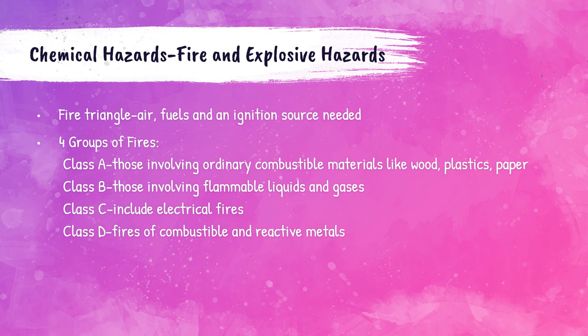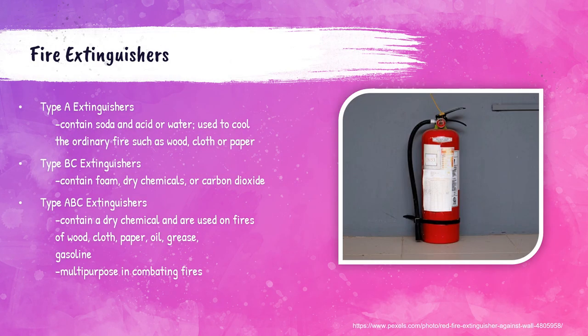Fires are also a hazard in the laboratory. There are four classes of fires: Class A fires are caused by ordinary combustible materials such as wood or paper; Class B fires are caused by a vapor-air mixture over flammable solvents such as gasoline or grease; Class C fires occur in or around electrical equipment; and Class D fires involve combustible metals such as magnesium or lithium. Type A extinguishers contain water or soda acid and are used to cool Class A fires. Type BC extinguishers contain carbon dioxide, foam, or dry chemicals. Type ABC extinguishers consist of a dry chemical and serve as a multi-purpose extinguisher for wood, cloth, paper, oil, grease, and gasoline fires.